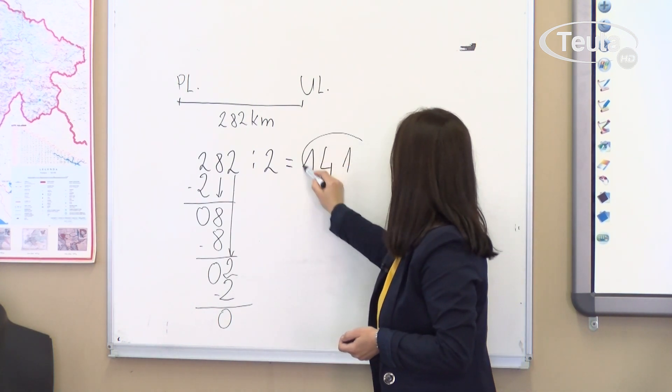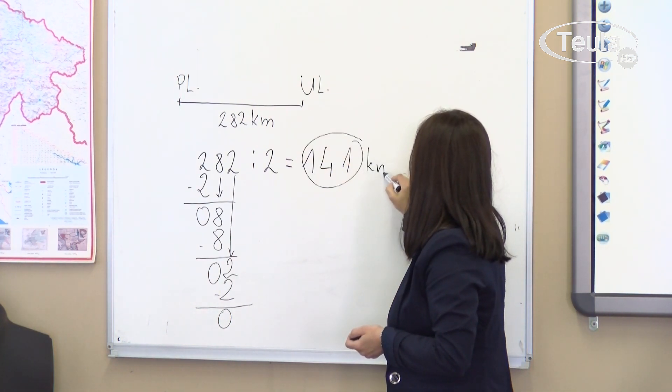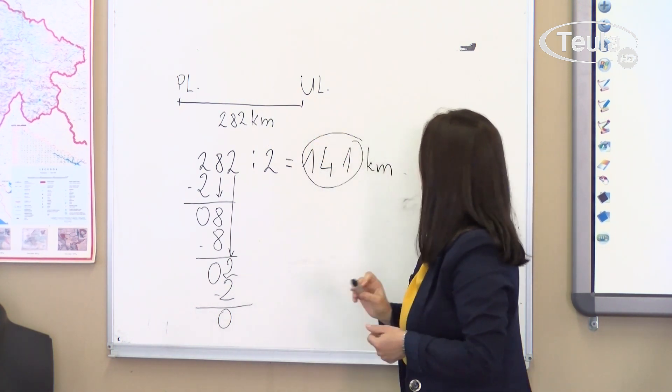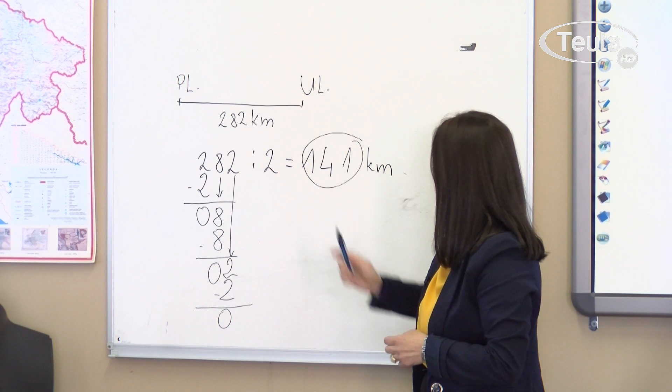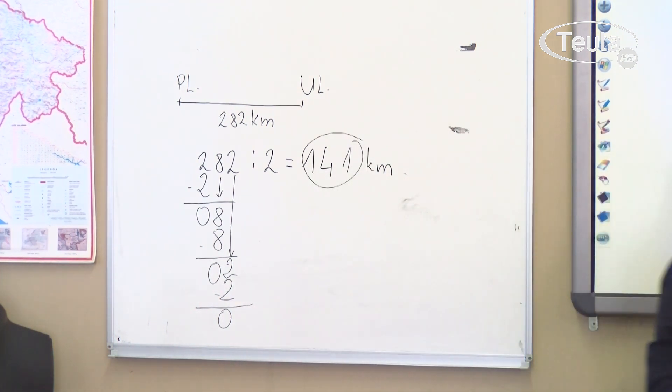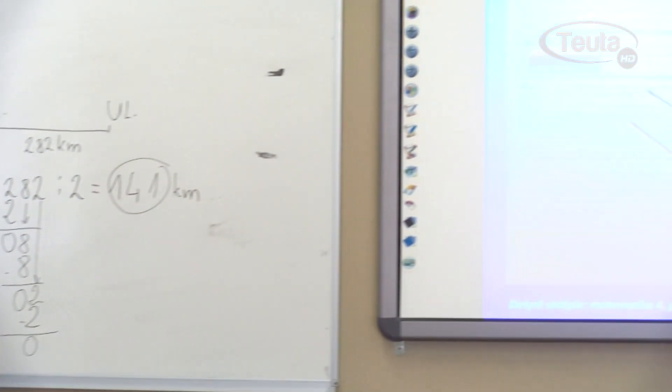So we get 141 kilometers remaining for the bus to reach Ulqin, which is half the route. Let's return to the exercises.